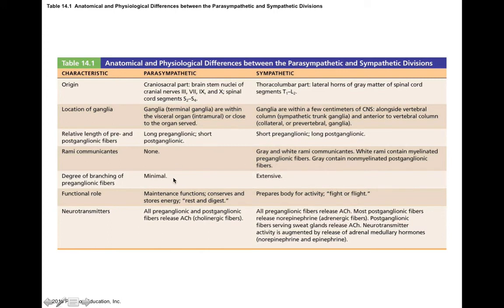Parasympathetic nerves are typically very minimally branched, whereas sympathetic nerves are usually extensively branched. Functionally, the parasympathetic nervous system promotes rest and digest, while the sympathetic nervous system prepares your body for activity and is more involved with fight or flight responses.